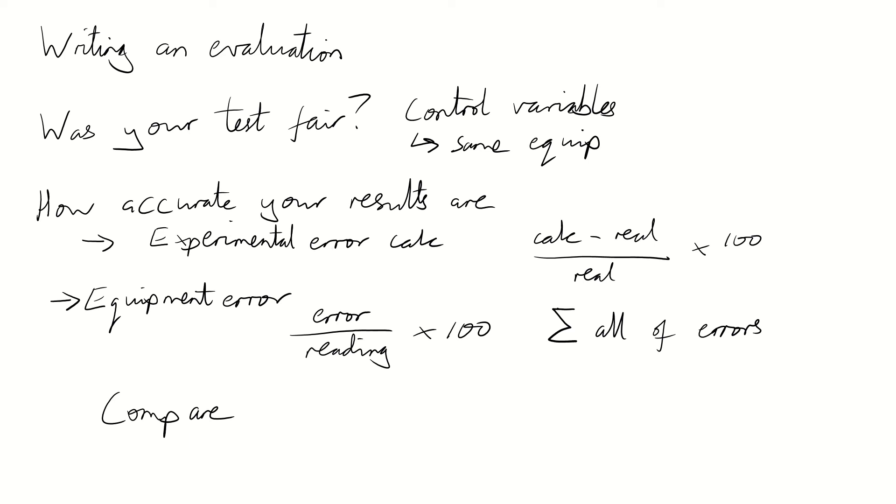If the experimental is below the equipment error, you've done the practical perfectly. All of the errors generally responsible from the equipment. Whereas, you know, again, most students, 99.9% of the time, experimental will be larger than the equipment. If it's a bit above, you can say your results are accurate. If it's quite a large bit above, then not accurate.